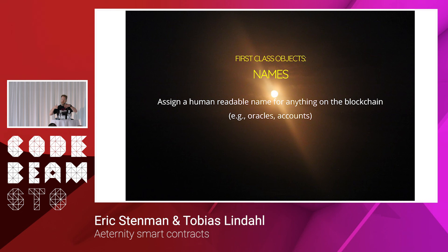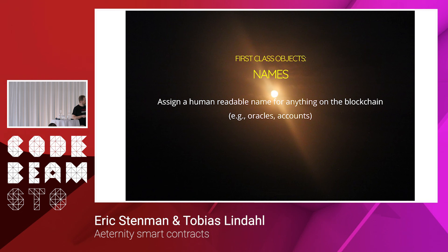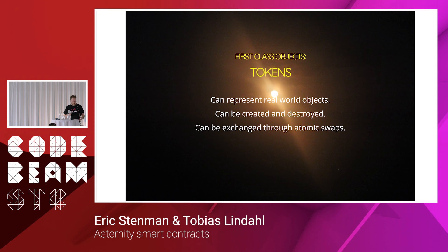Another thing is names. Tobias was talking about these accounts that you have as just a public key — a long string of digits or letters that no one can really remember. So you want names so that you can refer to your account in some easy way. There's a way to register a name and connect that name to an account on the chain.